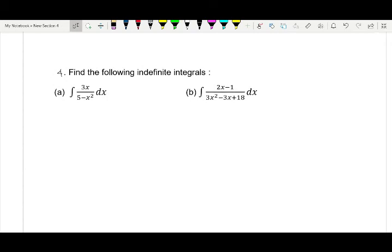Okay, so here we have integral of 2x minus 1 divided by 3x squared minus 3x plus 18 with respect to x.